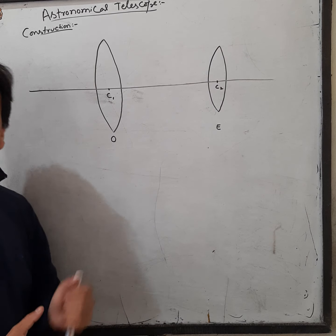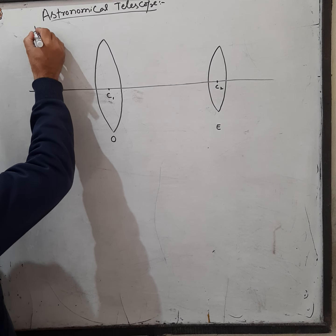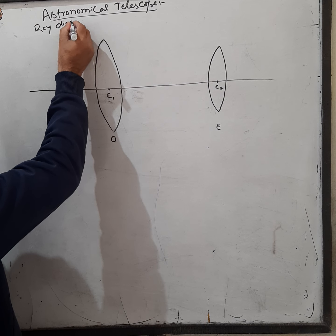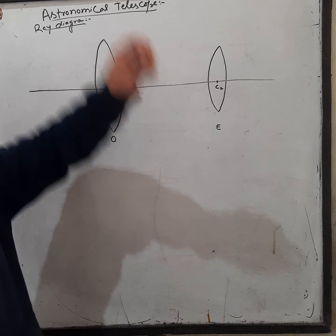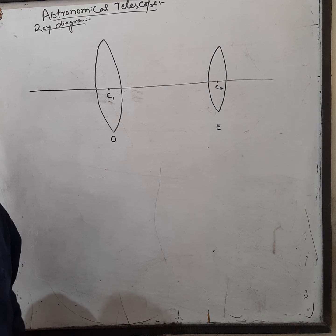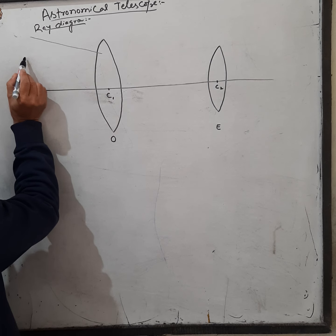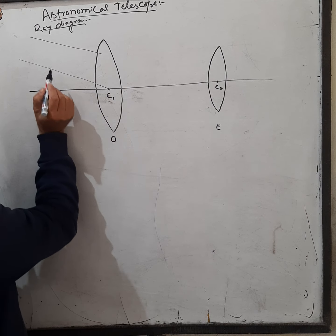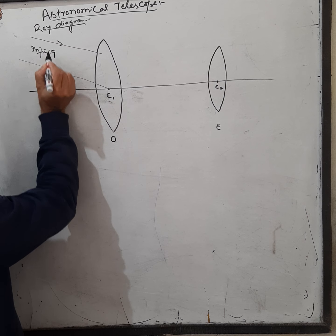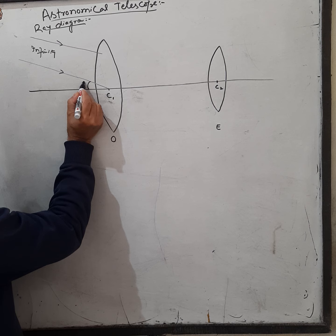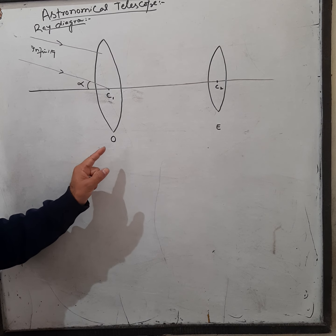Ab main aap logon ko ray diagram dikhata hoon — yeh bahut important point hai. Object jo hota hai woh infinity par hai, jaise stars aur planets. Wahan se parallel beam of rays aati hain, jo principal axis ke saath angle alpha banati hain.